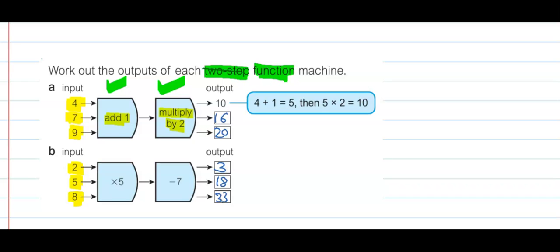This is the way we do a two-step function machine. In the previous question we followed just a one-step function machine. This is a two-step function machine: first we are adding 1 then multiplying by 2, and in the second question we are multiplying by 5 and taking away 7. Is that clear?